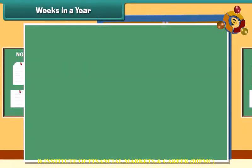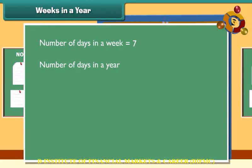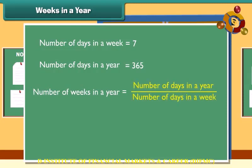Weeks in a year equals the number of days in a year divided by the number of days in a week, which is 365 divided by 7, which equals 52 weeks.